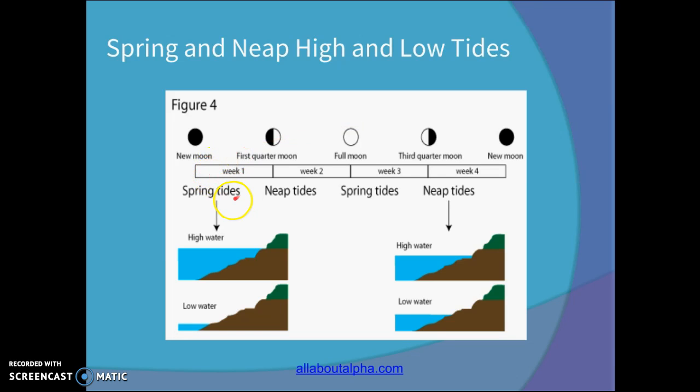Spring and neap tides, they occur kind of alternating. So in the first week of the Moon cycle, you'll get a spring tide, the new Moon. Then when you get to the first quarter, you'll get a neap tide.